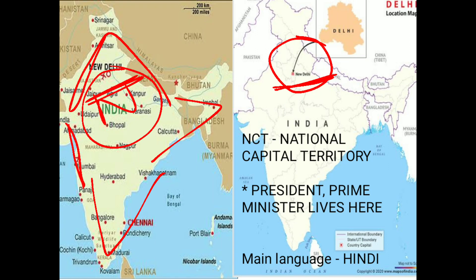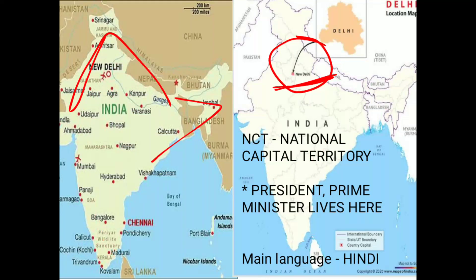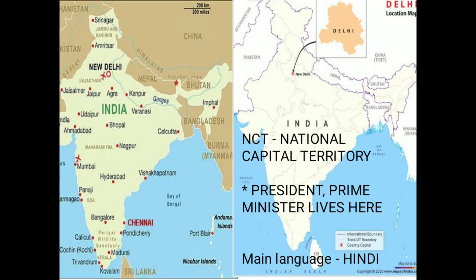Delhi is the capital of our country, and it is located on the bank of the Yamuna river. Yamuna is a very important river — it is a tributary of Ganga. Delhi is also called the National Capital Territory of Delhi, or NCT. NCT means National Capital Territory.